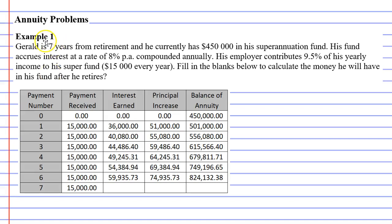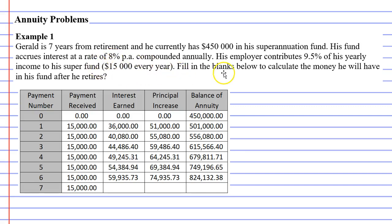In this video, we're going to complete example one. Gerald is seven years from retirement, and he currently has $450,000 in his superannuation fund. His fund accrues interest at a rate of 8% per annum compounded annually. His employer contributes 9.5% of his yearly income to his super fund, which is just $15,000 every year. Fill in the blanks below to calculate the money he will have in his fund after he retires.